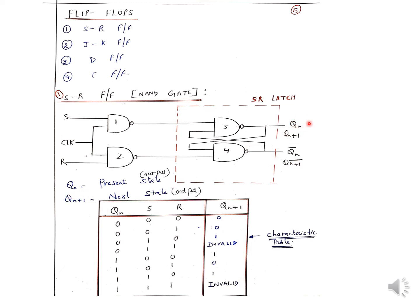I have written Qn+1 and Qn+1 bar. Qn is the present output — these are the assumed outputs we have obtained from some inputs applied to S and R. Qn+1 will be the next output, meaning the output we get from the assumed Qn. In the next slide I will show the significance of Qn+1 and Qn+1 bar.